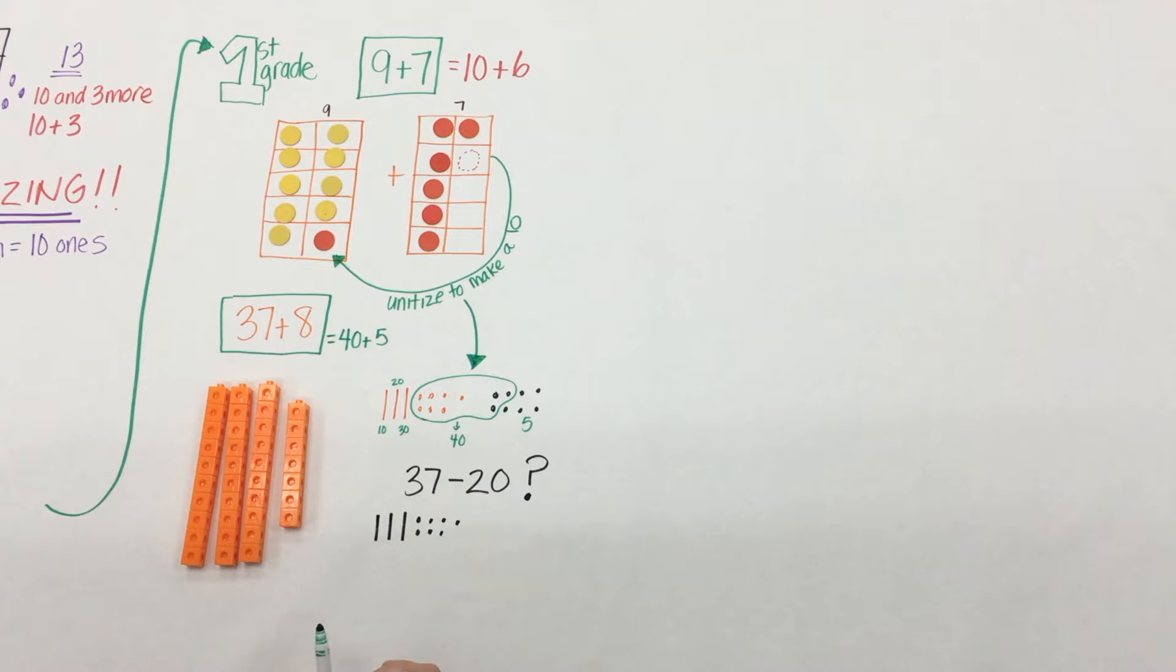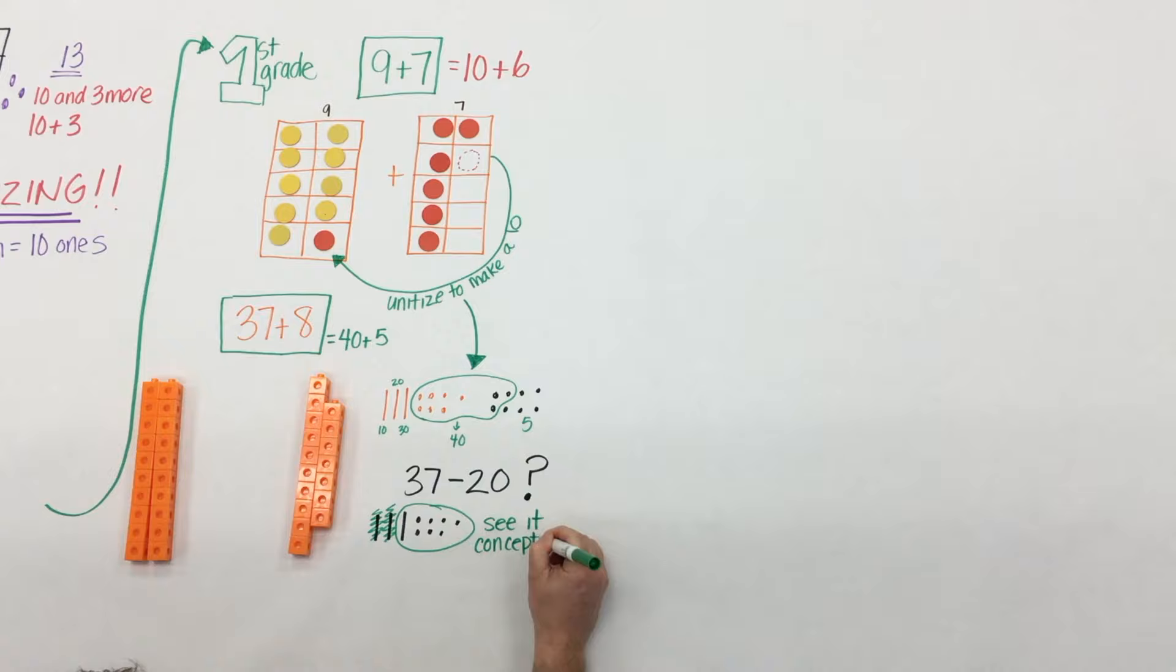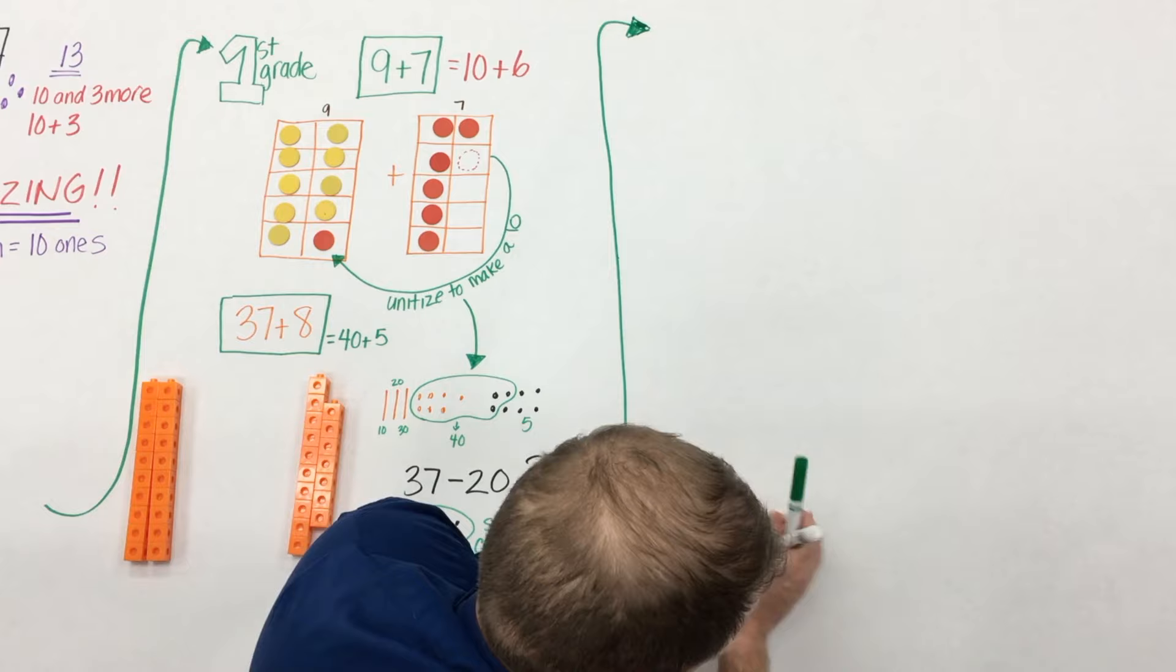So what does this look like with subtraction in first grade? Well in first grade students are only subtracting multiples of 10 and here 37 minus 20 they can see if they removed two tens they're left with 17.